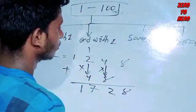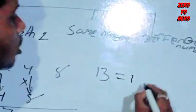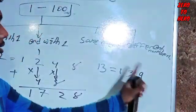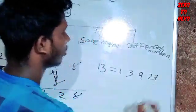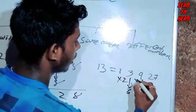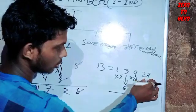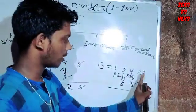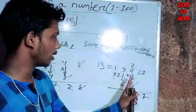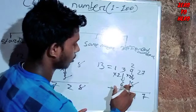For example, 13: first number one, next number three. Three digit squared gives nine, three cubed gives twenty-seven. So 13 cubed is 2197.